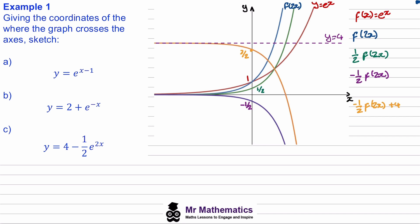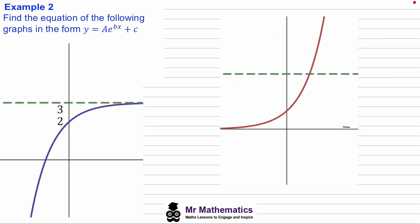That shows how we can build up different sketches using function notation. In example two we're asked to find the equation of the purple curve. We start with y equals e to the x and transform it in stages. The first thing to notice is the curve has been reflected in the y-axis — the asymptote is on the left for e to the x, but on the right for the purple curve — meaning we're dealing with e to the negative x, i.e. f(−x).